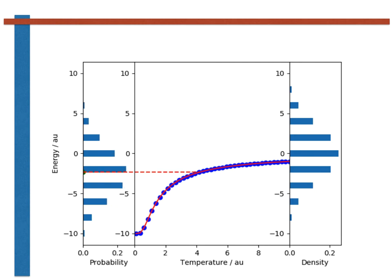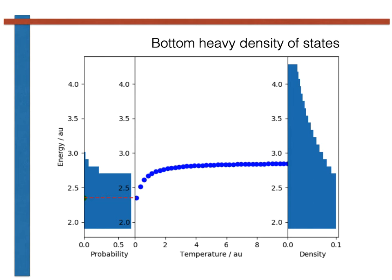It is worth considering what would happen if the density did not have this structure with many more high energy states than there are low energy states. What happens, for instance, if we have a density of states similar to the one shown on the right here, which has many low energy states and relatively few high energy states?